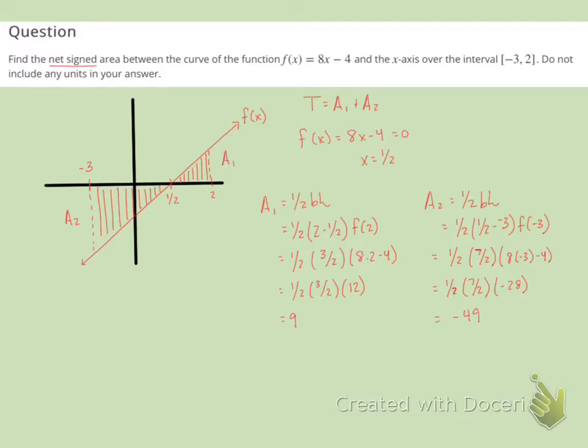So again, notice that I kept the negative here because it asked for a net signed area. So now the total is going to be the first area plus the second area, which gives us a total net area of negative 40.